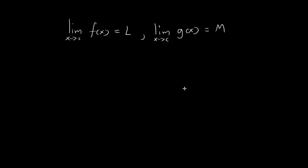In this video, we're going to establish a few more limit laws, and we're going to do this by using the results we've established in the past few videos. So before I start, I'm going to give a quick recap. In the past few videos, we were always given two functions, f and g, and for these two functions, as x tends towards c, they both have limits equal to l and m, respectively.